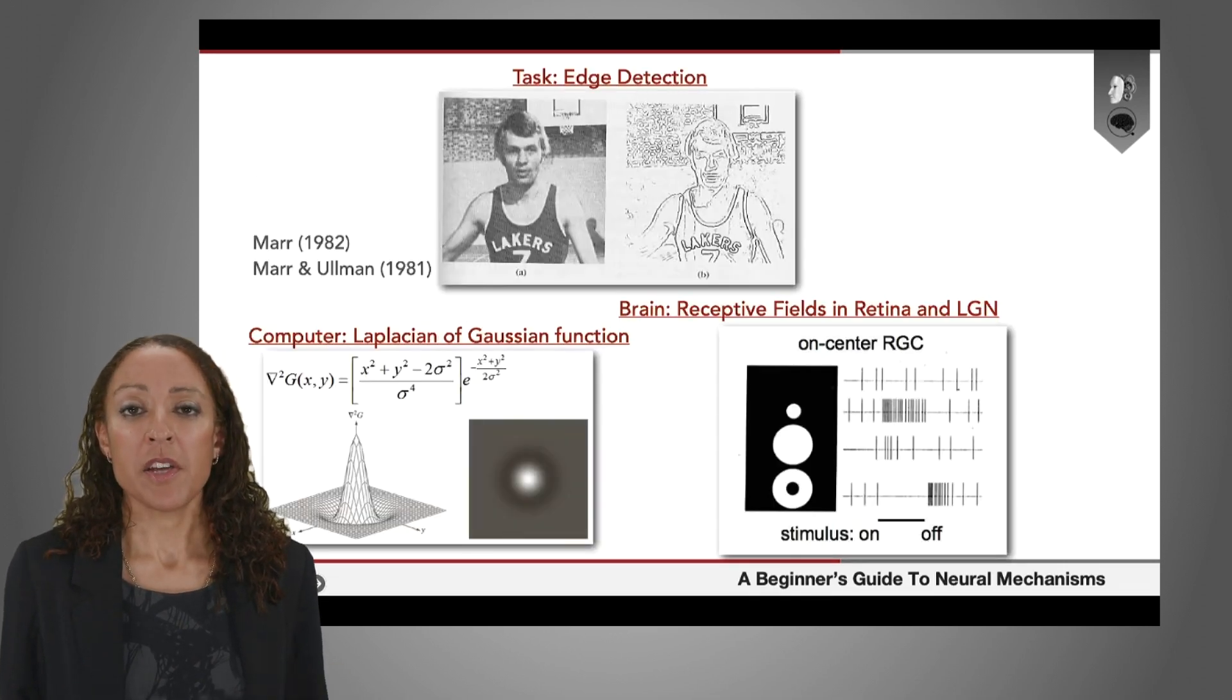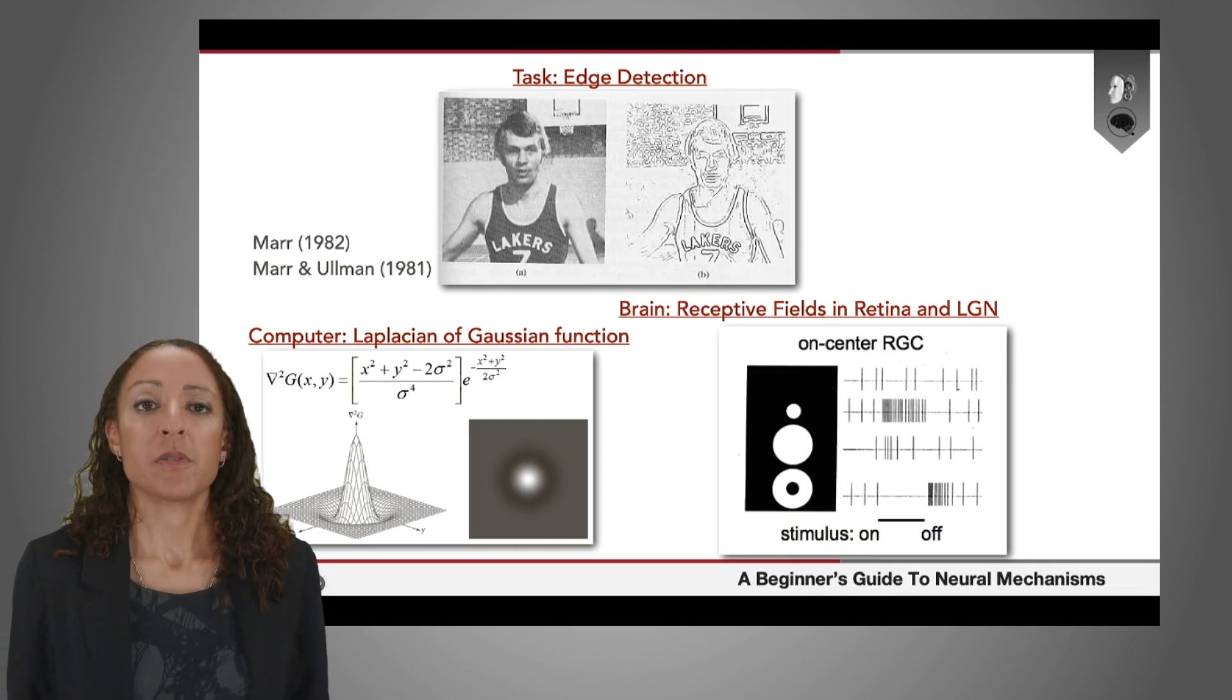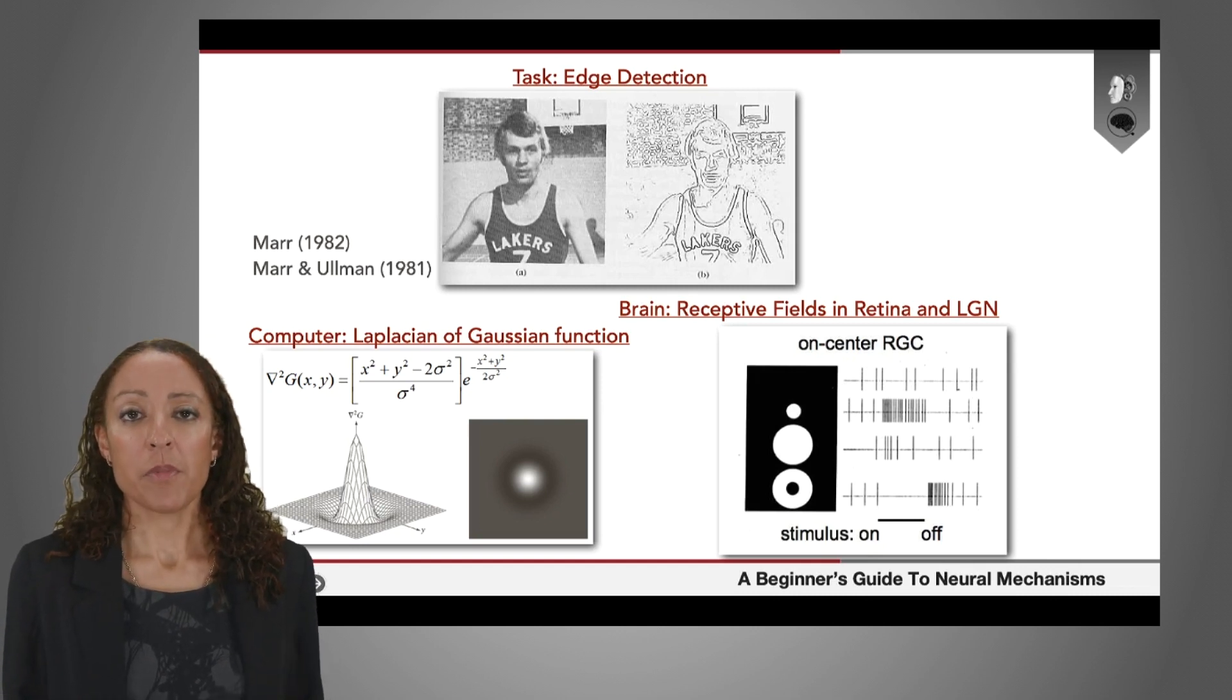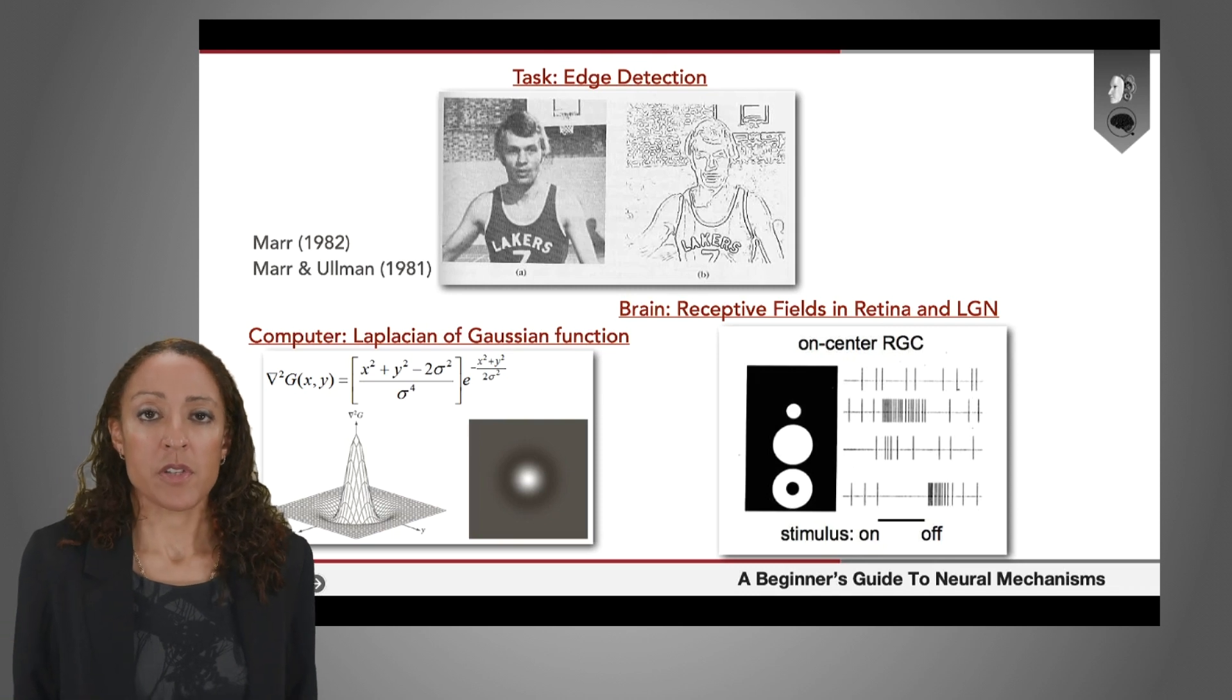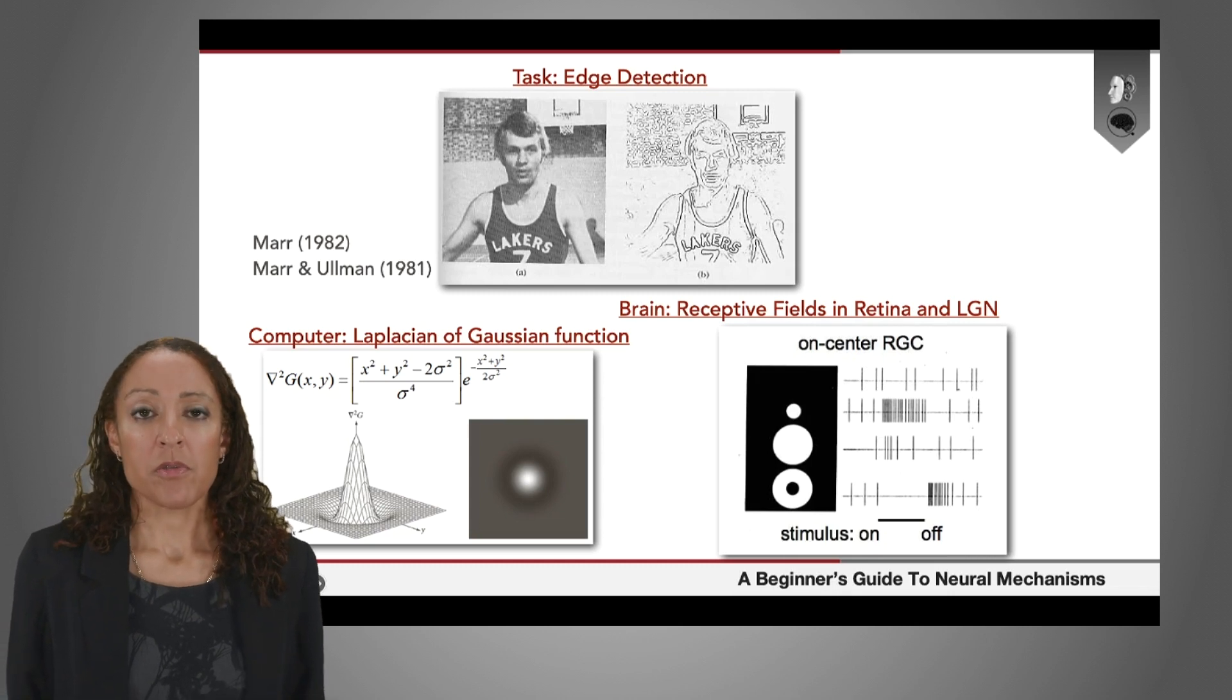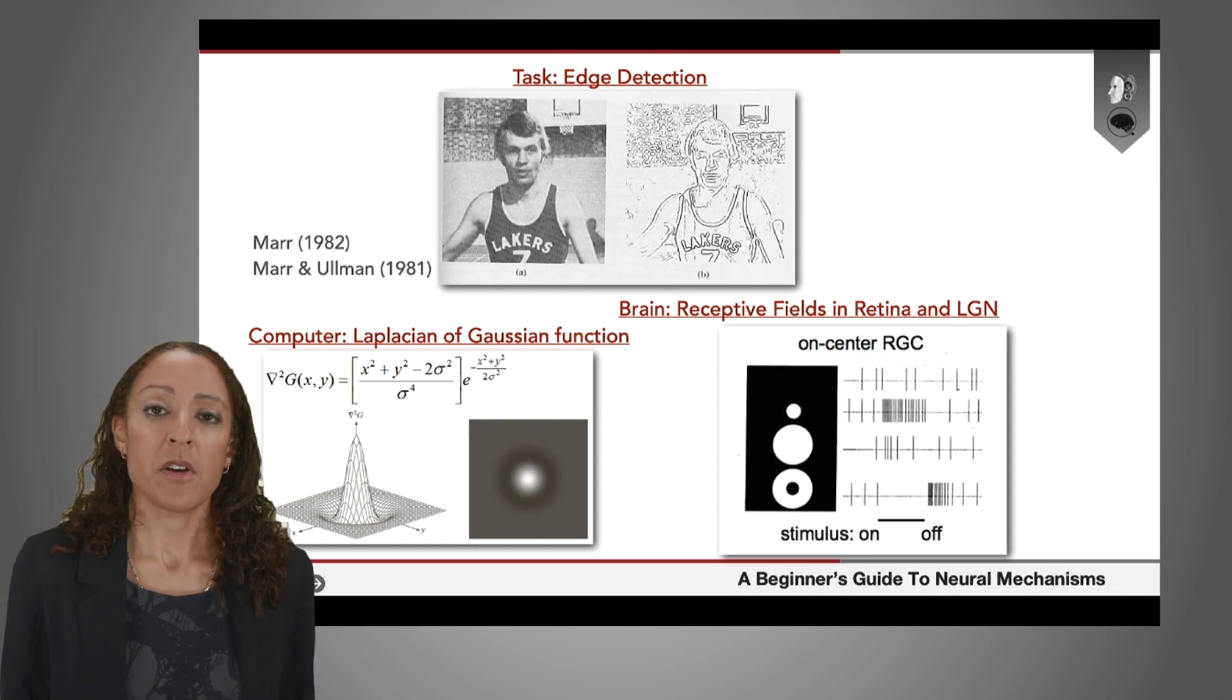So this was an idea that was developed a few decades ago by some very influential work from David Marr, also in collaboration with Shimon Ullman, who developed this theory of the visual cortex in the book called Vision.